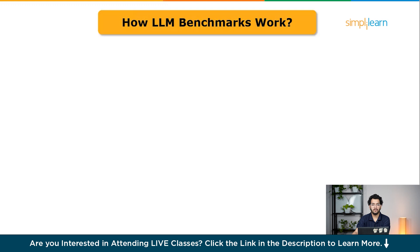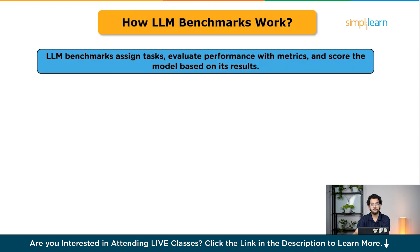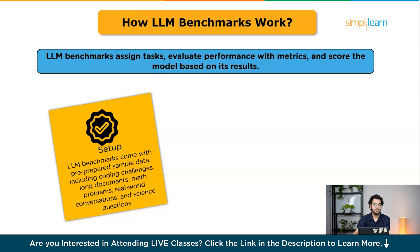So how do LLM benchmarks work? They follow a clear and systematic process: they present a task for the LLM to complete, evaluate its performance using specific metrics, and assign a score based on how well the model performs. The first step is setup. LLM benchmarks come with pre-prepared sample data including coding challenges, long documents, math problems, and real-world conversations. Tasks span areas like common sense reasoning, problem solving, question answering, summary generation, and translation, all presented to the model at the start of testing.